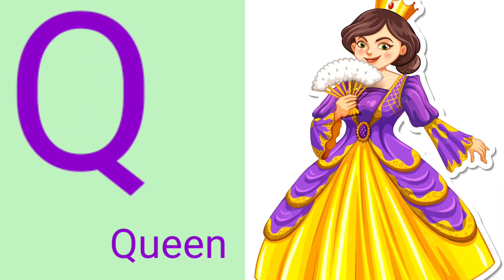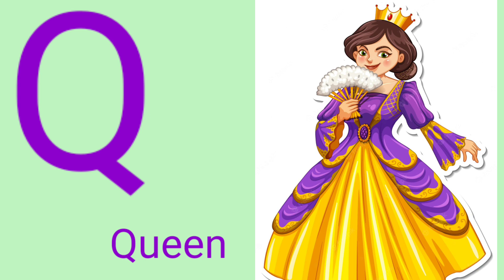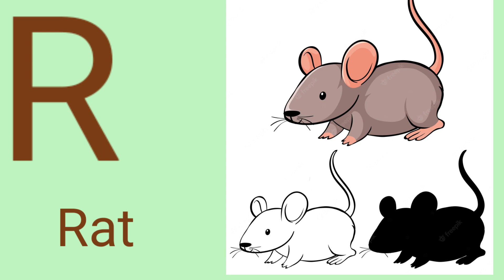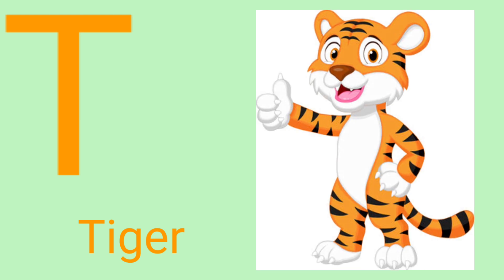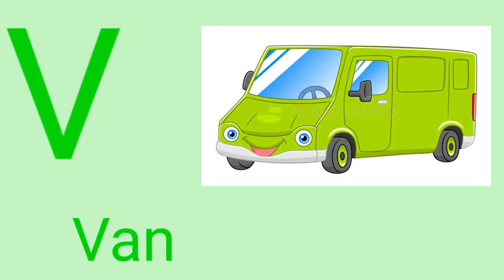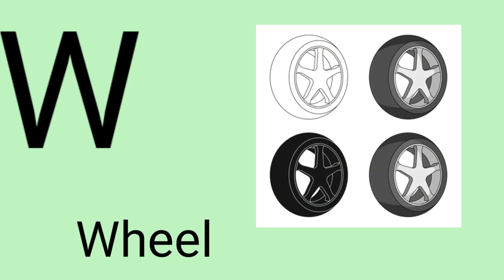Q for queen. R for rat. S for swan. T for tiger. U for umbrella. V for van. W for weed.